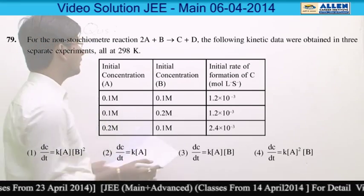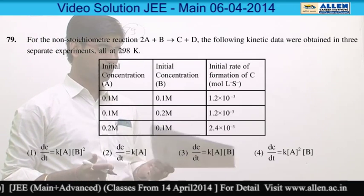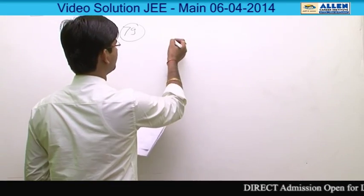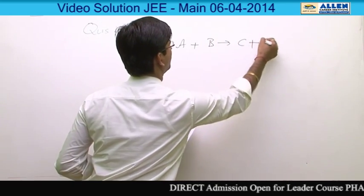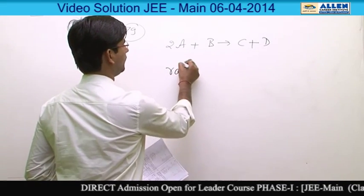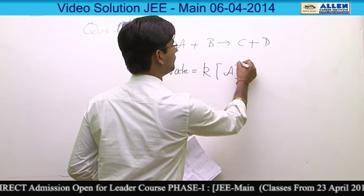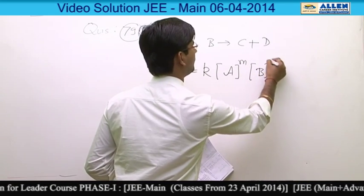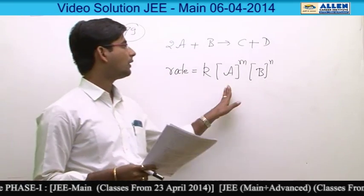In question number 79, there is given some data of variation of concentration and with that, variation of rate of reaction. The reaction is 2A plus B gives C plus D. If we write the rate law for the given reaction, it will be: rate equals rate constant into concentration of A to the power M, into concentration of B to the power N, where M and N represent the order of reaction with respect to A and B.